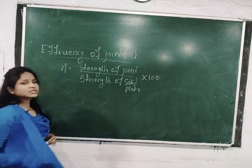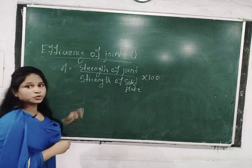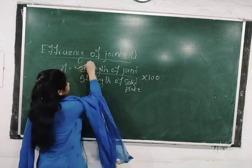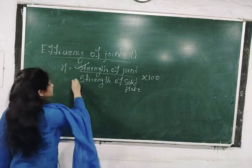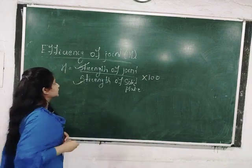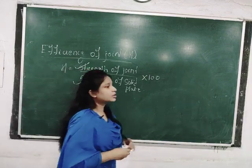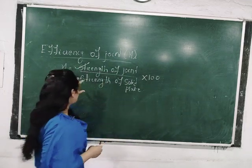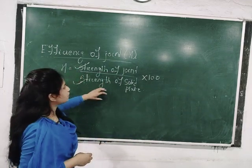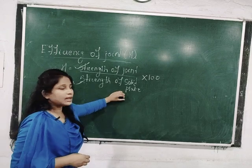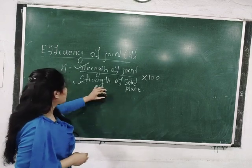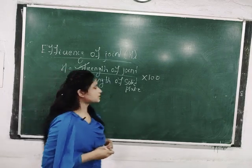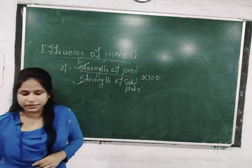To calculate the efficiency of the joint, we require two things: one is the strength of the joint, and another is the strength of the solid plate. The strength of the joint we have already discussed. So the next is the strength of the solid plate — we have to know how to calculate it.